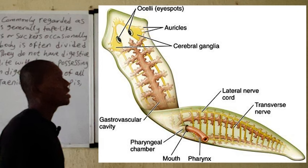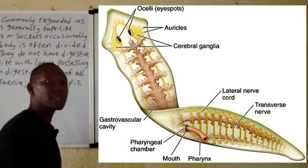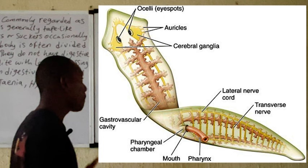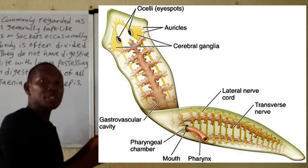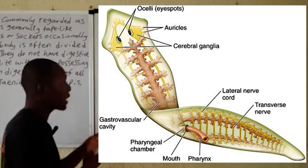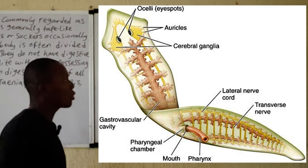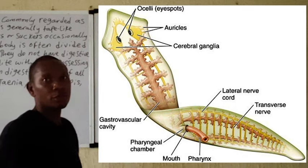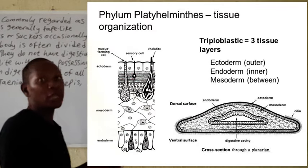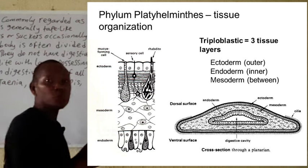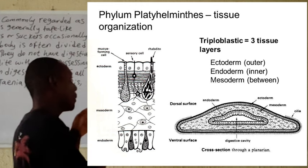From the diagram of the planaria that you can see on the board, you can see that they are acoelomate, meaning they do not possess a true body cavity. They are bilaterally symmetrical, as visible from the diagram on the board. These organisms are triploblastic, meaning their body has three germ layers — the ectoderm, the mesoderm, and the endoderm.